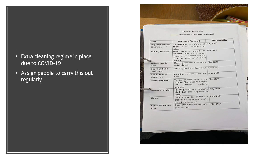There is an extra cleaning regime in place for COVID, telling you how to clean and how frequently. A deep clean is done every day — cleaners come in from around 2:30 onwards — but throughout the day assign people to carry out regular cleaning of hard surfaces, door handles, play equipment, tissues, rubbish, and floors. Ensure a cleaning regime is in place every day to limit the spread of COVID.